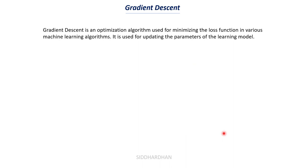Gradient descent is defined as an optimization algorithm used for minimizing the loss function in various machine learning algorithms. We use gradient descent in linear regression, logistic regression, and different models in machine learning. It is used for updating the parameters of the learning model — we continuously change parameter values until we reach the global minimum.